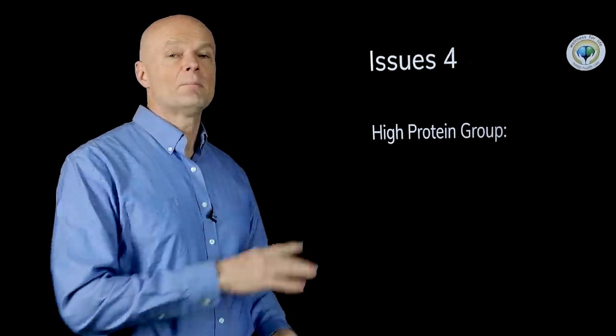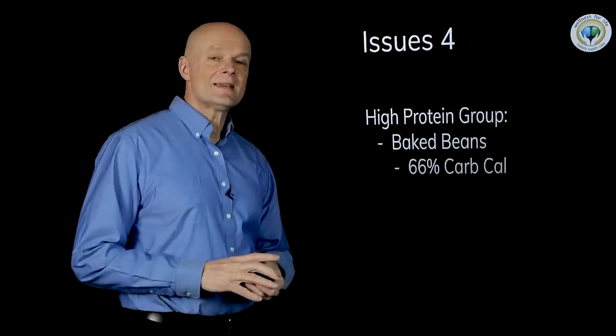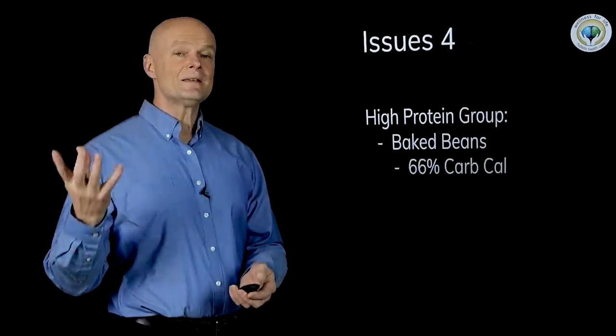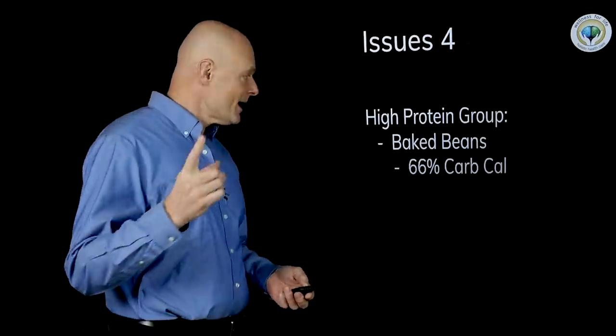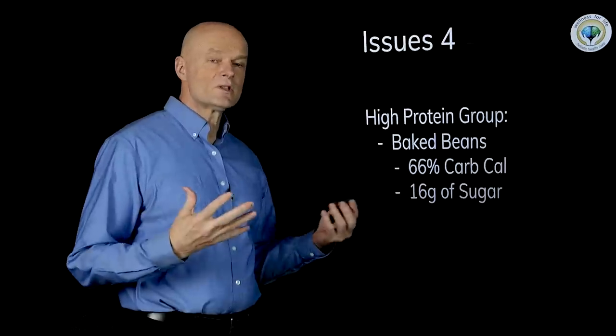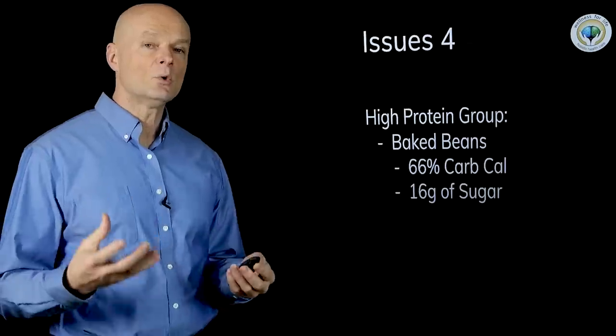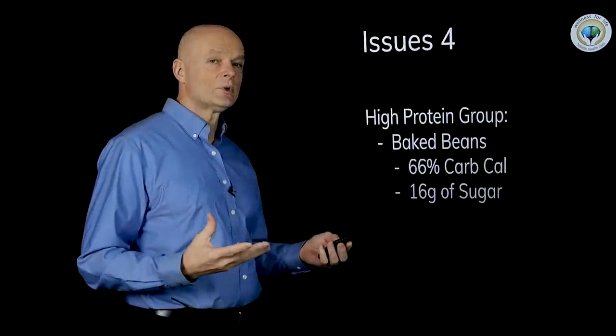Another issue I found was in how they classify these foods. One of the groups was called the high protein group. And yet one of the items here was baked beans which had 66% of its calories from carbohydrate, whereas meat has zero calories from carbohydrate. And it has massive amounts of added sugar. 16 grams in one serving of only 240 calories. It's almost like half a can of Coca-Cola. And yet they fit that with the high protein group.